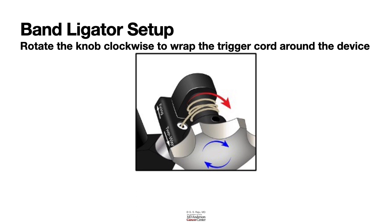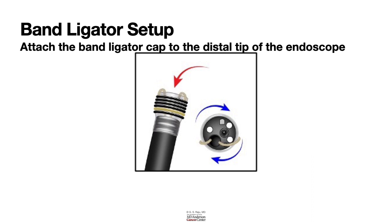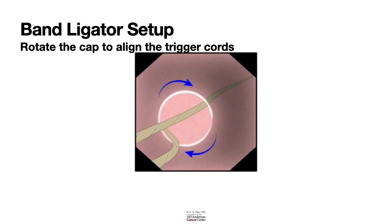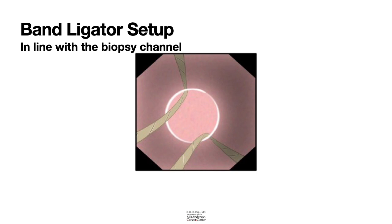Once you have the trigger card out, load it into the notch on the device, anchor the knot onto the groove, and rotate the knob clockwise to wrap the trigger card around the device. Then attach the band ligator cap to the distal tip of the endoscope. Make sure the trigger card is not in the middle of the view — rotate the cap to align the trigger card with the biopsy channel for a clear view.